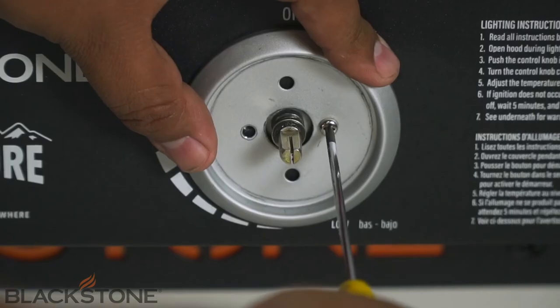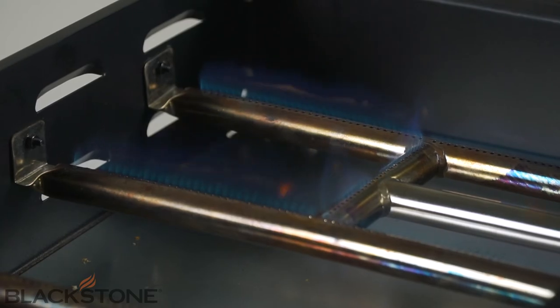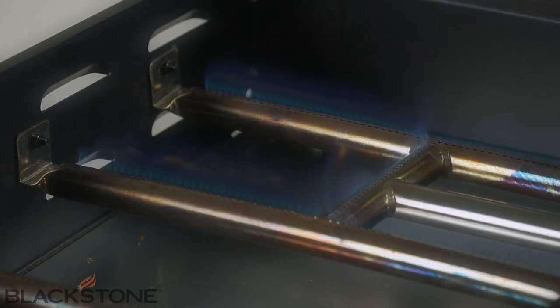Check to make sure the blockage has been removed before you screw the burner tube back in and put the griddle top back on. Make sure the tube fully ignites and get back to cooking.